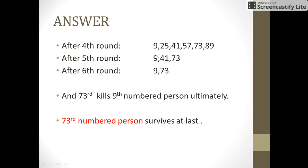In the next round 9 would kill 25 and pass the sword to 41. 41 kills 57 and passes the sword to 73. 73 kills 89 and passes the sword to 9.